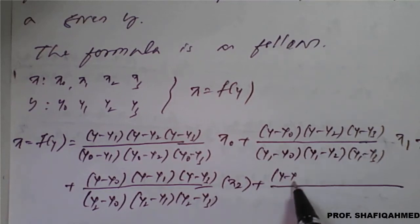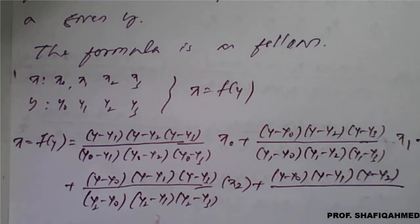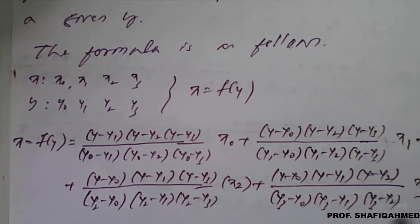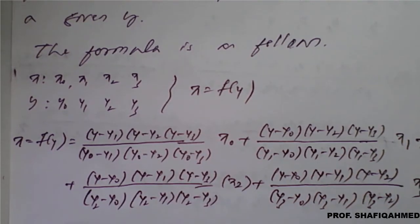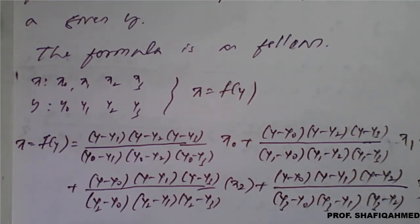Plus next term: y minus y0, y minus y1, y minus y2 — leaving y3 — divided by y3 minus y0, y3 minus y1, y3 minus y2 into x3. So we have x varying from x0, x1, x2, x3, so we stop here. This is the Lagrangian inverse interpolation formula — just interchanging x and y — and this is a useful formula to solve problems based on Lagrangian interpolation.